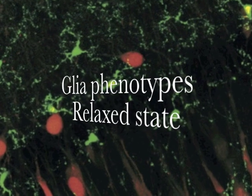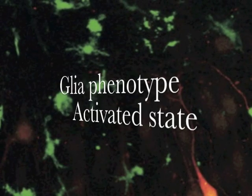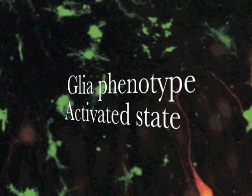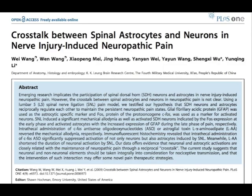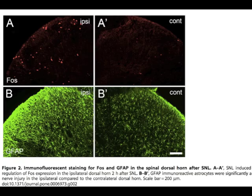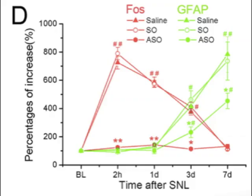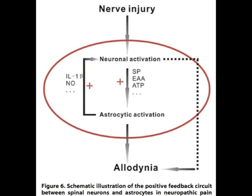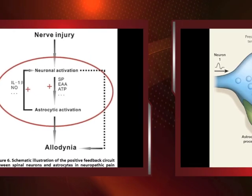Here we see a relaxed glia and here we see the contracted glia — the activated phenotype. There is a lot of crosstalk between glia, astrocytes, and neurons. Modern research from various schools has demonstrated again and again that activated glia produces a lot of inflammatory molecules like TNF-alpha and interleukins, irritating the nerves and creating feedback loops leading to neuropathic pain.